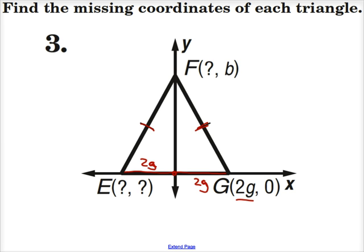However, it's 2g units in the negative x-direction. And so the x-coordinate of E would be negative 2g. Since both point G and point E lie on the x-axis, that tells me that the y-coordinate would be 0. So E is at negative 2g and 0.